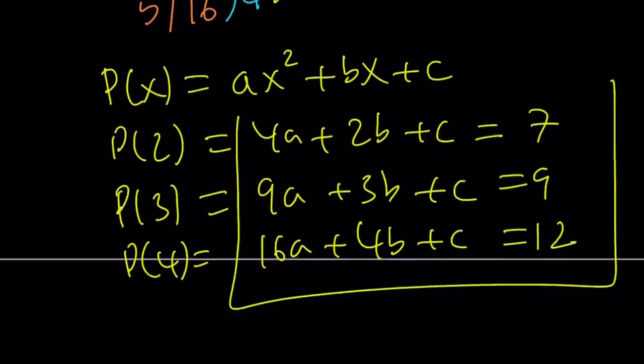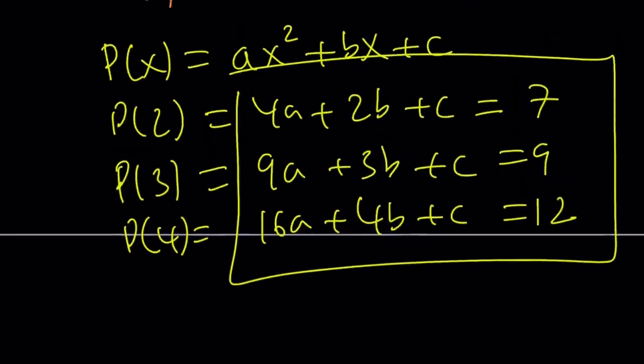Now, we've got a system of equations. You can easily solve this. It shouldn't take too long. But think about it. C is going to cancel out. Like, if you subtract this way, c is going to cancel out. You're going to end up with 5a plus b equals 2.